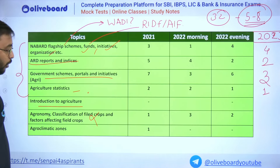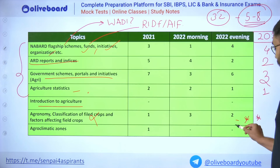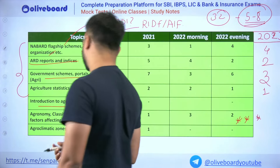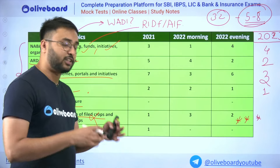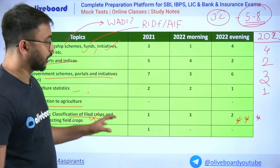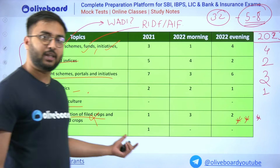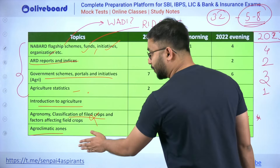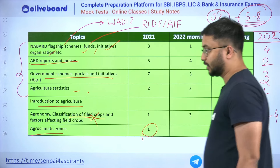Agronomy is a very, very important three-star chapter. Questions related to field crops, factors affecting crops, scientific names, classification of field crops, isolation distance, and spacing — any factual question associated directly with crops comes from agronomy. Agroclimatic zones is another important sub-chapter covering climatic factors responsive to agriculture; expect one or two questions. From agronomy specifically, there were 3 to 4 questions in your 2023 exam.